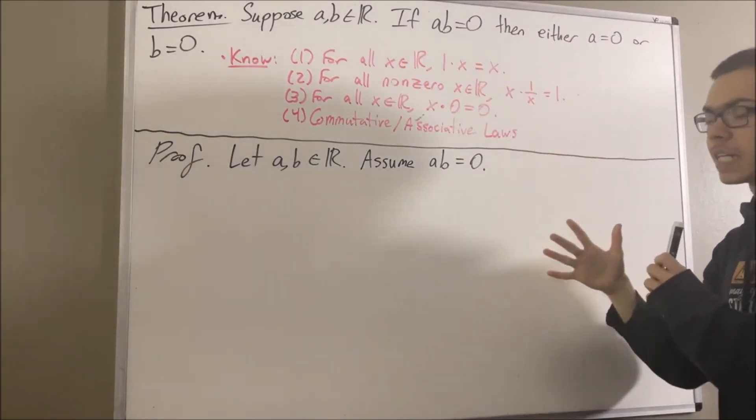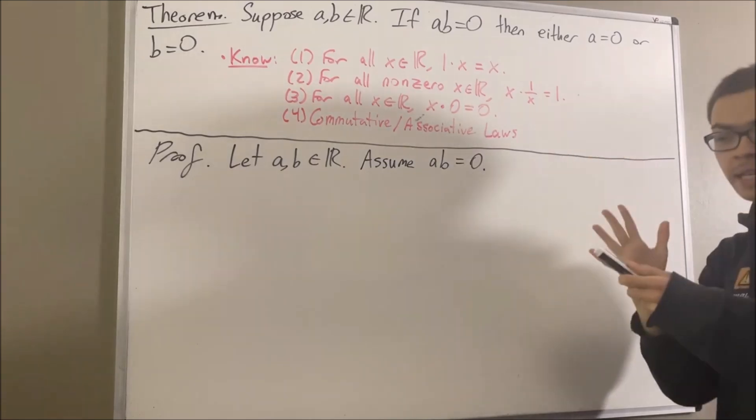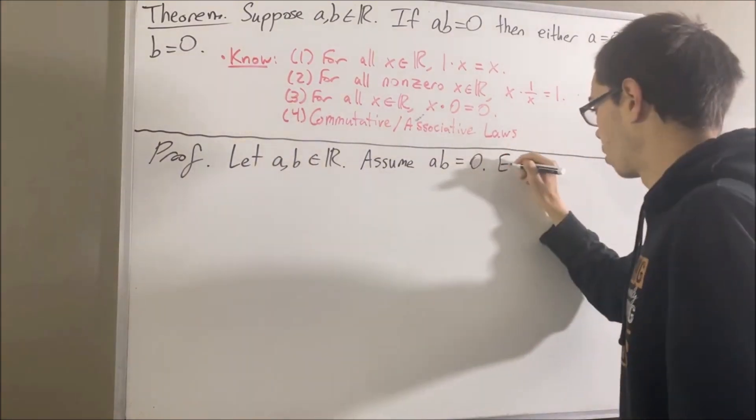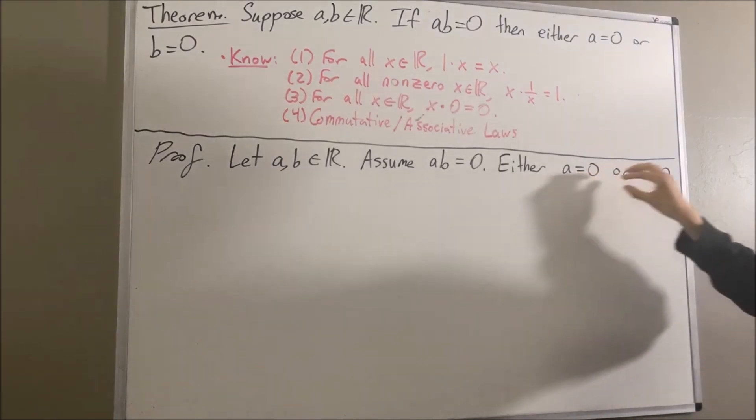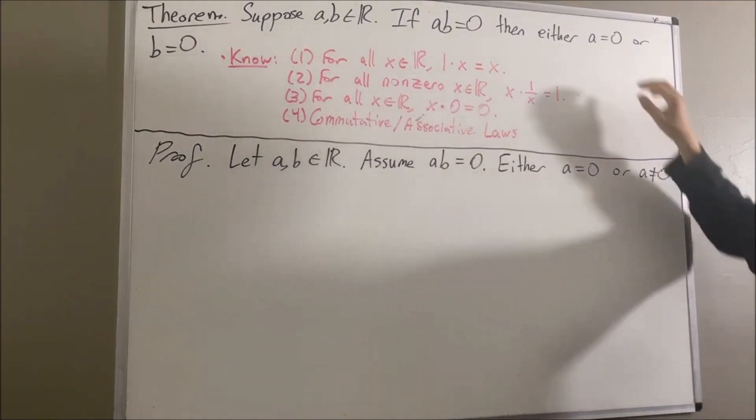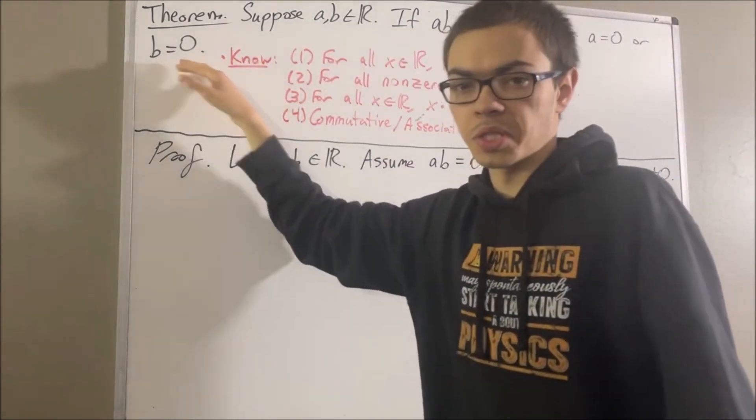We know for a fact that either A is equal to 0 or A is not equal to 0. And what we're going to do is we're going to prove in either case A is equal to 0 or B is equal to 0.